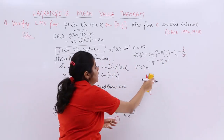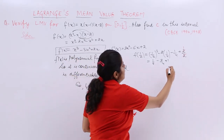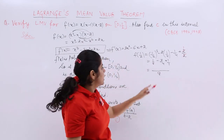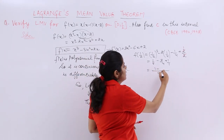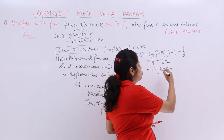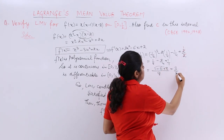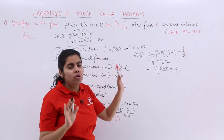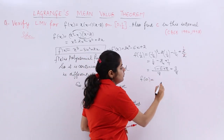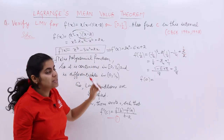Now let's find F(0). F(a) = F(0) means substituting x = 0 into f(x) = x³ - 3x² + 2x, which simply gives 0. So F(0) = 0. Now we have all the values needed to substitute into equation (1).